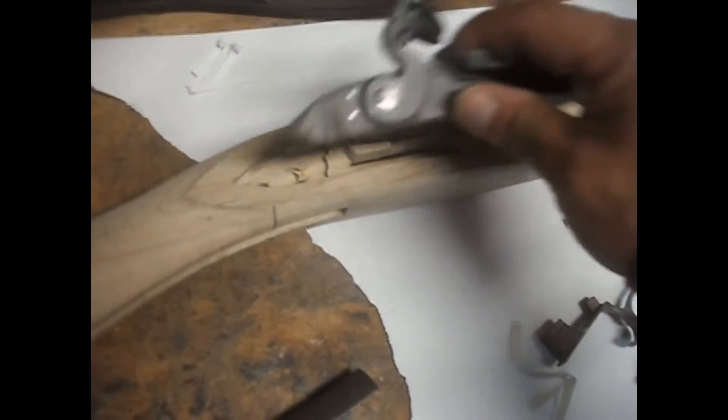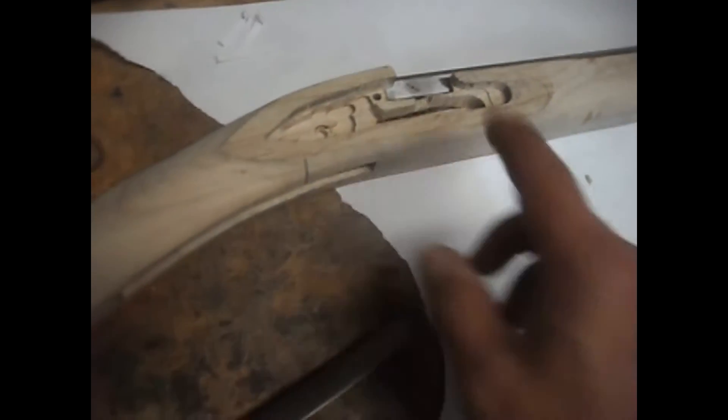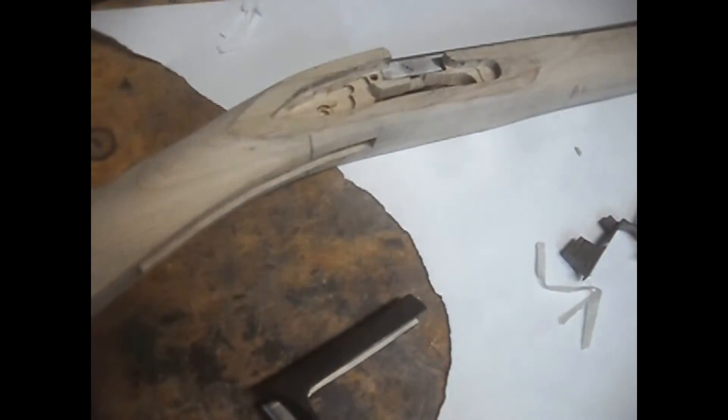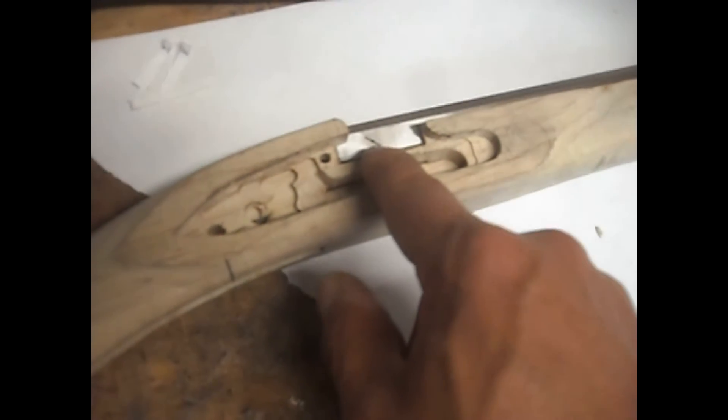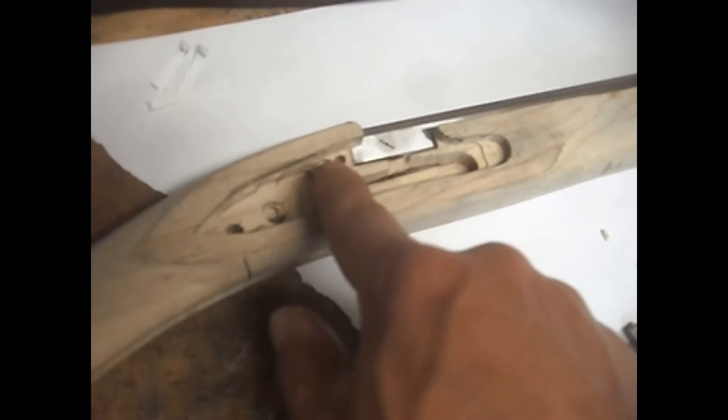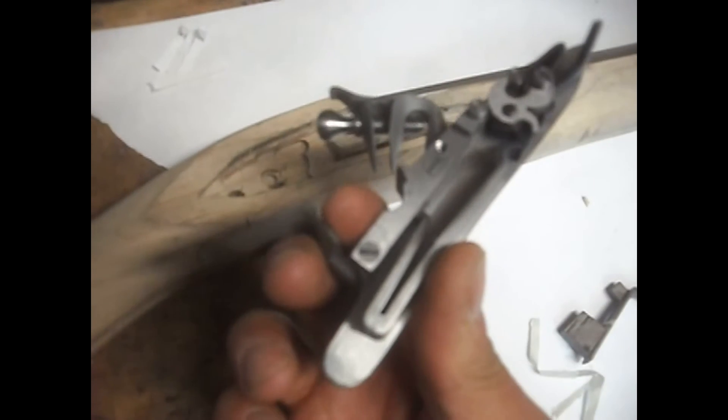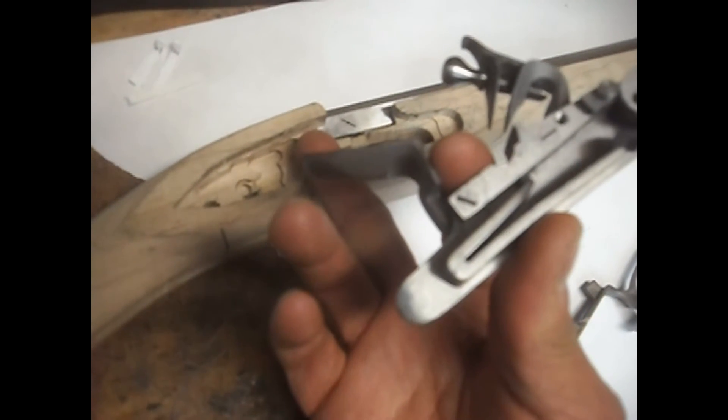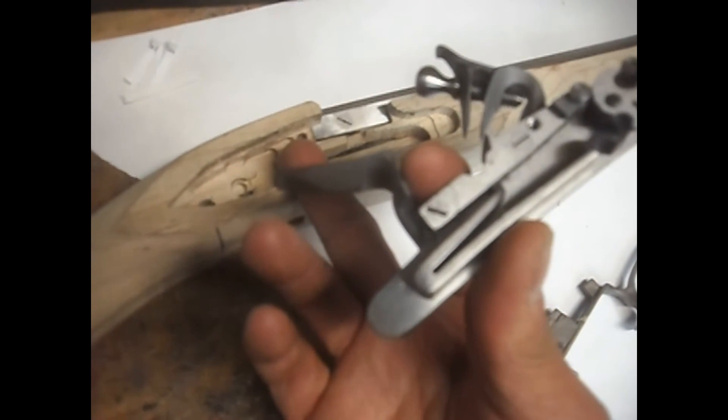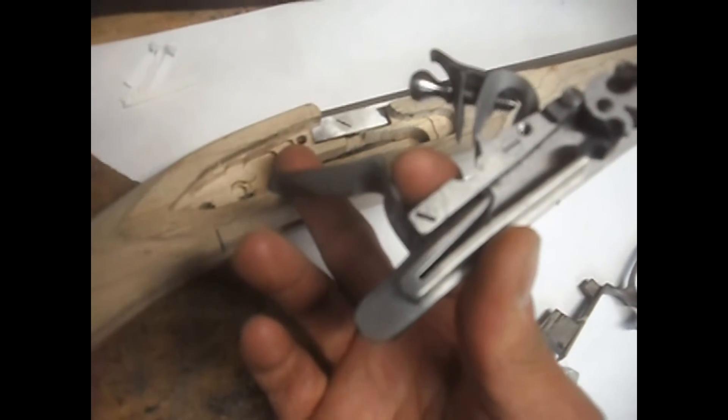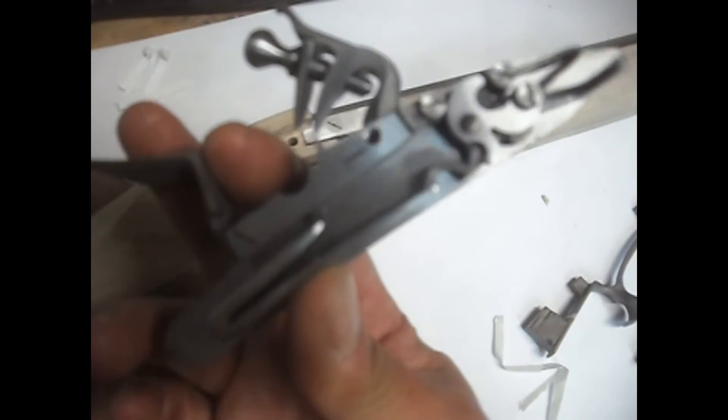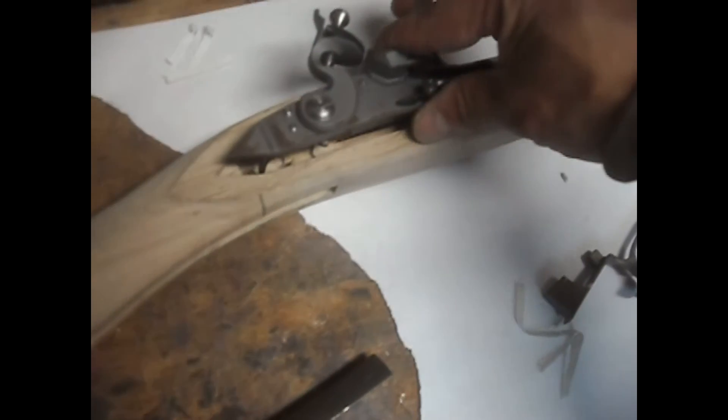They also drilled and tapped the vent plug, as well as drilled the hole for the lock bolt hole through the barrel or the breech plug lug and through the wood, and they threaded the hole that it goes into. So that's a cool thing too.